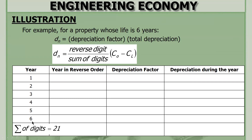The depreciation factor is reverse digit over sum of the digits. For year one, the depreciation factor is six over twenty-one. For the second year, it is five over twenty-one, and so on for each subsequent year.